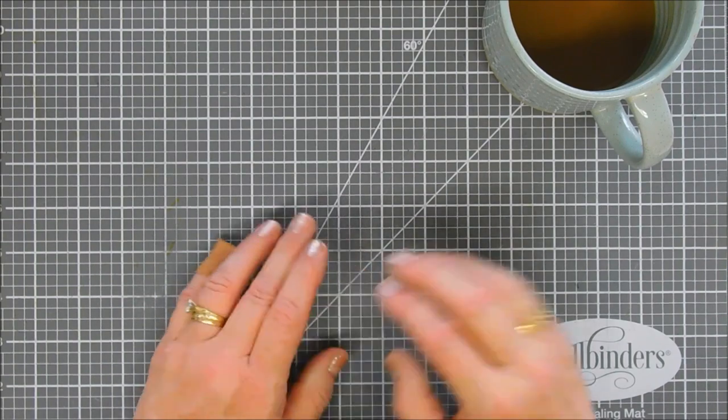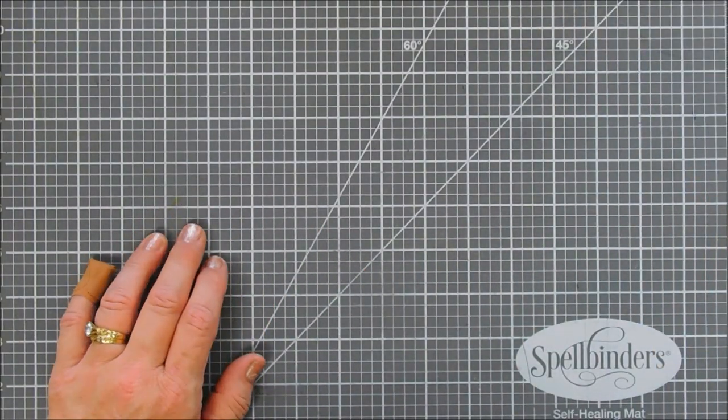Today I get to share with you a card. We're going to be using one of the club kits over at the Spellbinder shop. This is the card kit of the month. It's kind of a bonus project.